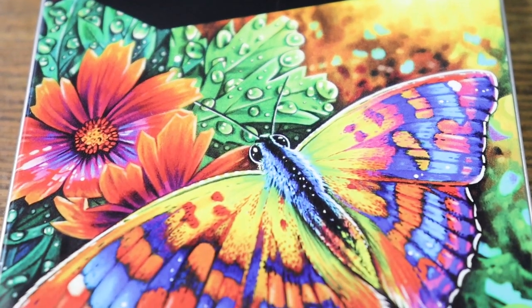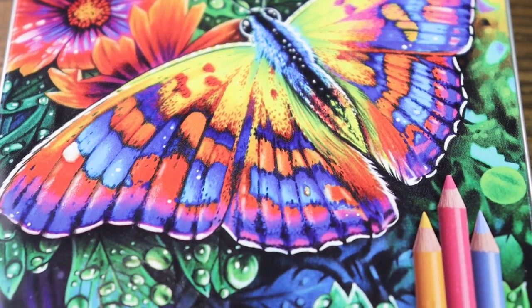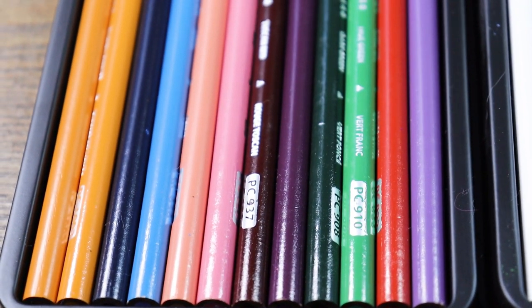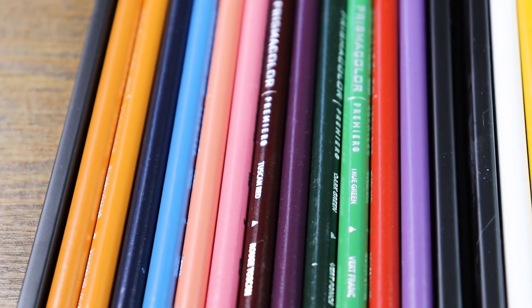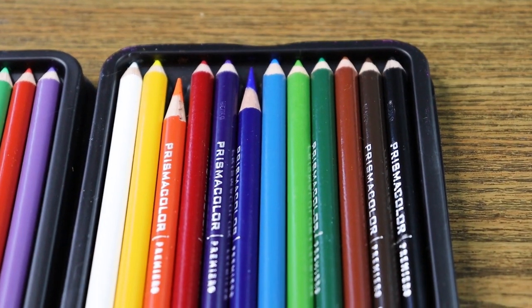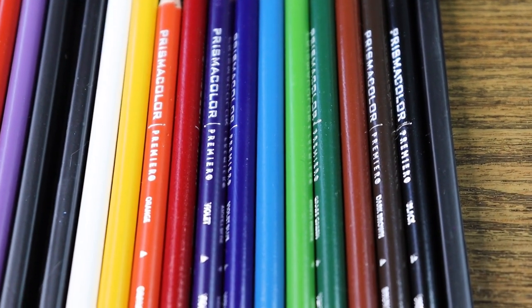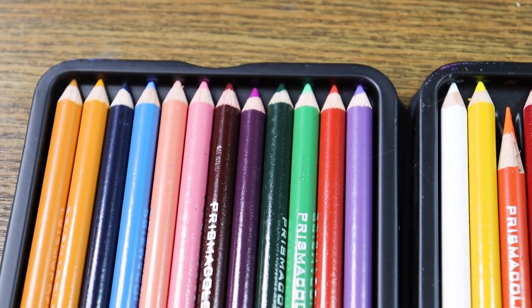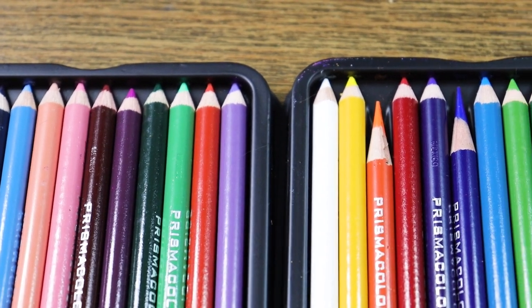Prismacolor color pencils are wax-based, which means they are creamier than the oil-based ones, polychromas for example. The wax-based pencils tend to be better at burnishing and blending than the oil-based ones because of their soft texture. For this video I'm going to use the set of 24 pencils. I think it has all the colors you need as a beginner artist.